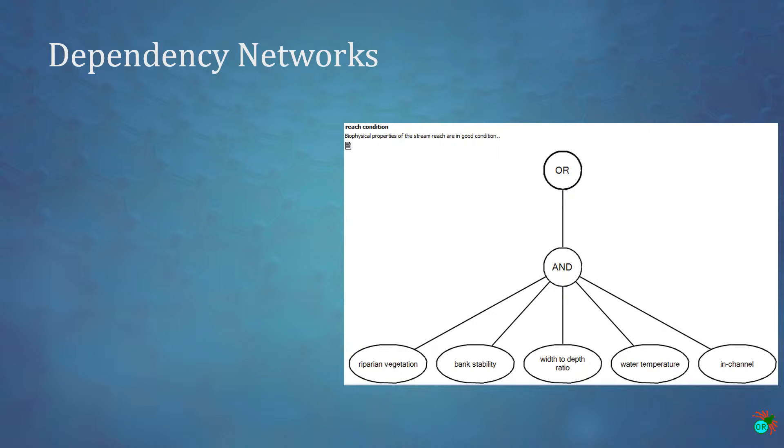So back to those dependency networks I mentioned a minute ago. Here's one from the CHUACON Knowledge Base that will be referenced in a later presentation. It represents what it takes to have biophysical factors of a stream reach in good condition. It combines results from five supporting topics, antecedent dependency networks and NetWeaver parlance.